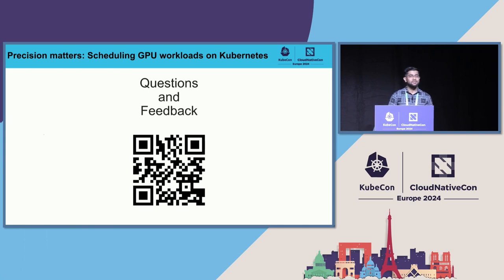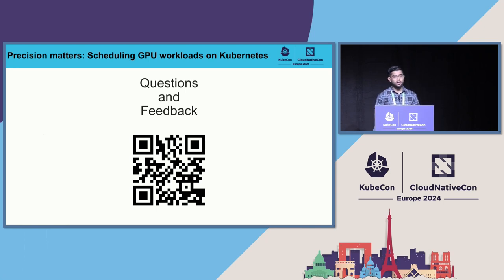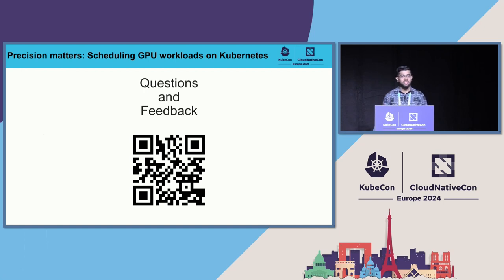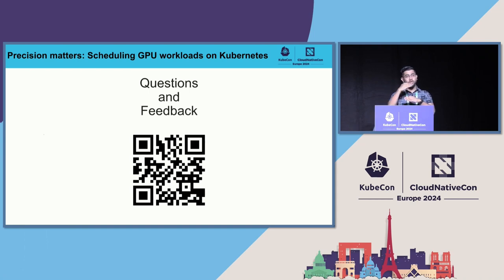Q: What are you prioritizing in terms of that queue — fair sharing or maximum GPU utilization? A: Yes, we have a fair sharing model. I can get back to you on the details of how fair sharing works on a cluster level — I'm mostly part of the platform team which runs workloads on Kubernetes clusters, and that federation layer sits on top of the platform.